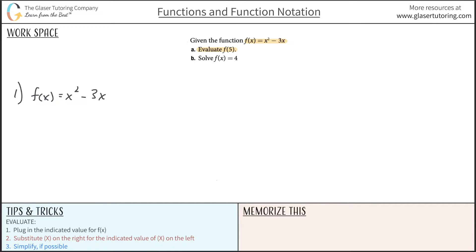The first step is to plug in the indicated value for f of x. So the indicated value is f of 5. So instead of writing f of x here, I'm going to write f of 5. Now what this is telling me is that everywhere I have an x, I'm going to substitute it in for 5.